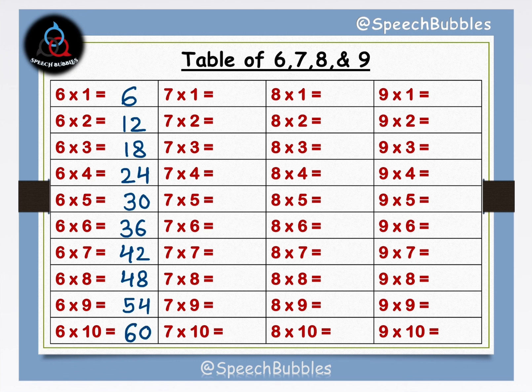we will see the table of 7. 7 1s are 7, 7 2s are 14, 7 3s are 21, 7 4s are 28.